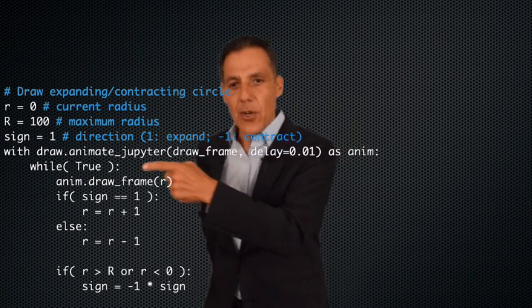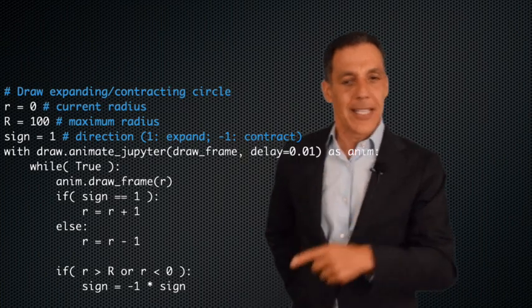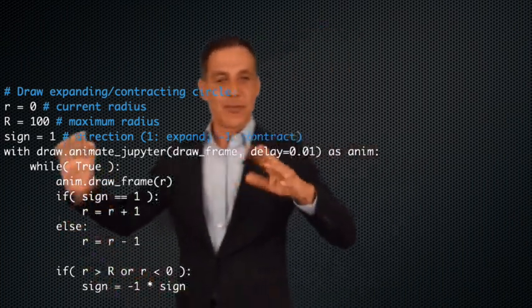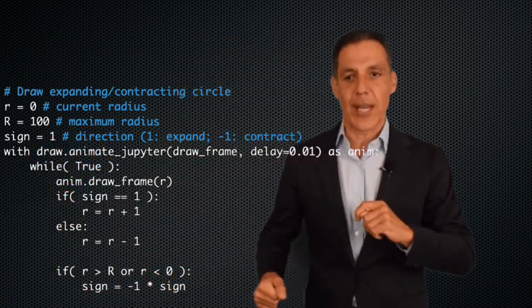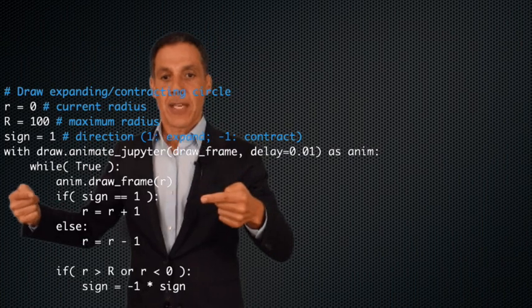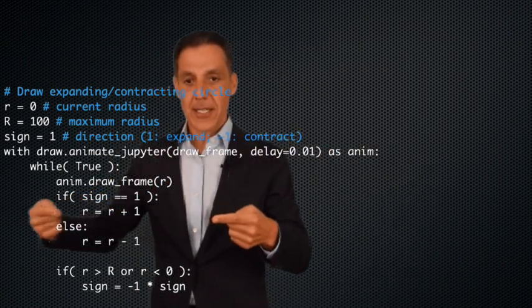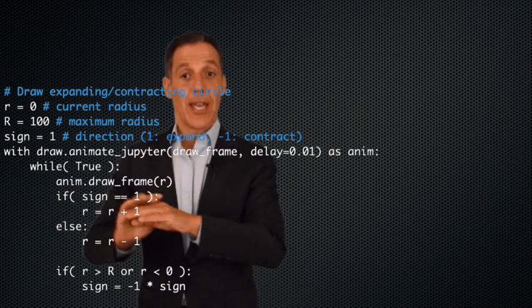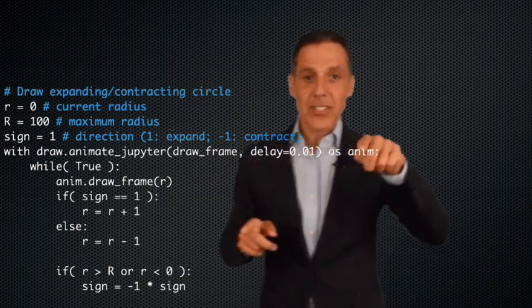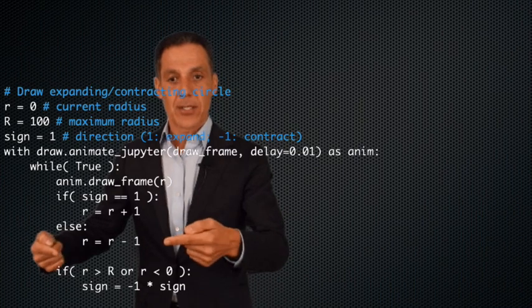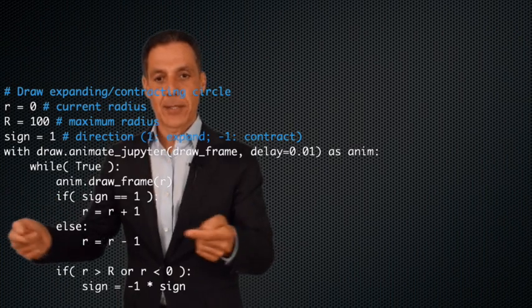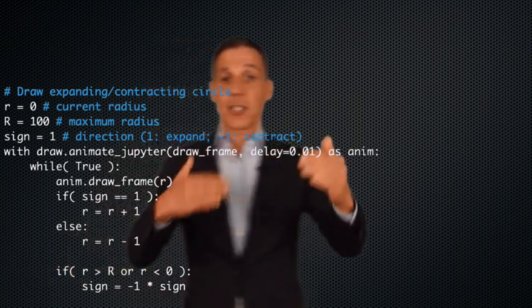Let's fill in the details. Notice up here I said `while True` — it just runs forever; I'll force the user to quit out. In the while loop: call `drawframe` with whatever the radius is. If the sign is one, I'm expanding — increment the radius. If the sign is negative one, then decrement. When the sign is one, I increment and do not evaluate the else clause. This little conditional is responsible for flipping.